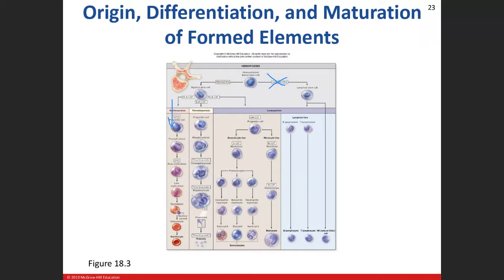If we have our multi-CSF and in addition our GM-CSF — that's our granulocyte-monocyte colony stimulating factor — we'll get a progenitor cell that will either differentiate into the granulocyte line or the monocyte line, depending on which colony-stimulating factors are produced. Certain chemicals are going to influence which direction those cells differentiate into.